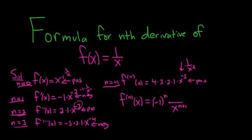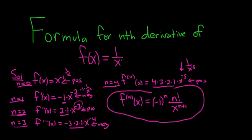What about the top piece? The top piece seems to be just a factorial. 1 factorial is 1, 2 factorial is 2, 3 factorial is 6. This is exactly 4 factorial. So this is going to be n factorial. And so that's the formula for the nth derivative of 1 over x.